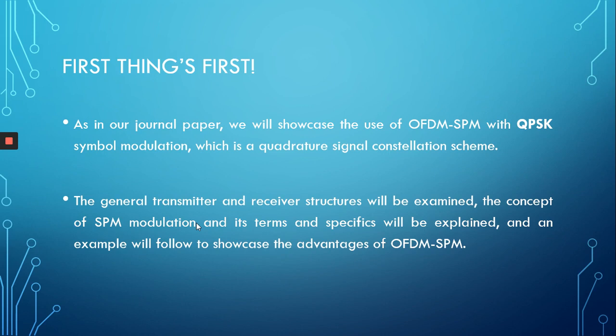QPSK uses both in-phase and quadrature subcarriers to transmit data. This is partly because QPSK is, to an extent, considered a higher-order modulation scheme, and this is something we want to show OFDM-SPM can handle and produce gains with. In this video, we're going to examine the general transmitter and receiver structures of OFDM-SPM, explain its terms and specifics, and follow with an example to showcase the advantages of OFDM-SPM.